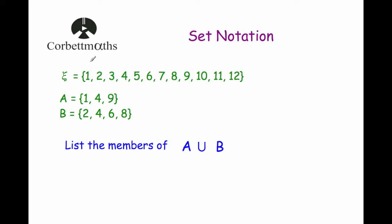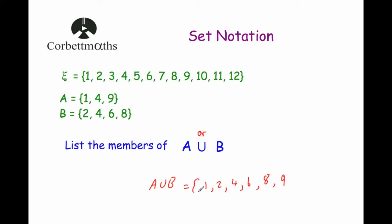Next question — again the same universal set 1 to 12, with A = {1, 4, 9} and B = {2, 4, 6, 8}. The question says write down the members of A union B — so A or B, meaning any number that is in A or B. So listing those out: 1, 2, 4, 6, 8 and 9. So A union B equals {1, 2, 4, 6, 8, 9}.